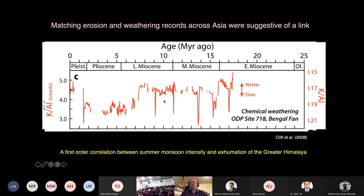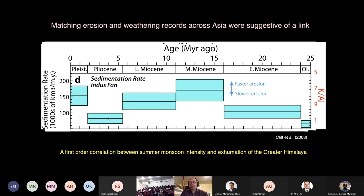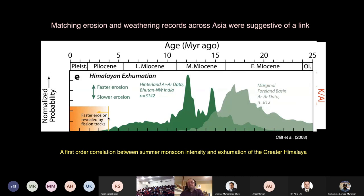The idea was that rainfall would be strong in the Middle Miocene and then get weaker into the Pliocene. When you look at the rate of sediment delivery into the Arabian Sea into the Indus Fan — constructed from seismic data — this also seemed to show a pattern where we have weaker and then stronger rates of sediment delivery, probably caused by faster erosion, then getting weaker through time. This supported the idea that when the monsoon rains are strong you get rapid erosion, and that material is swept out into the Arabian Sea and deposited in the submarine fan.